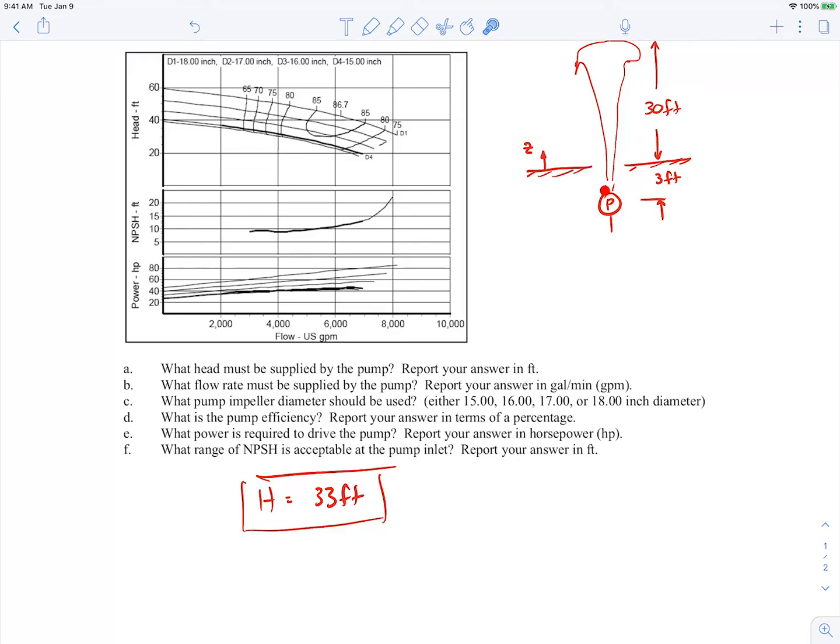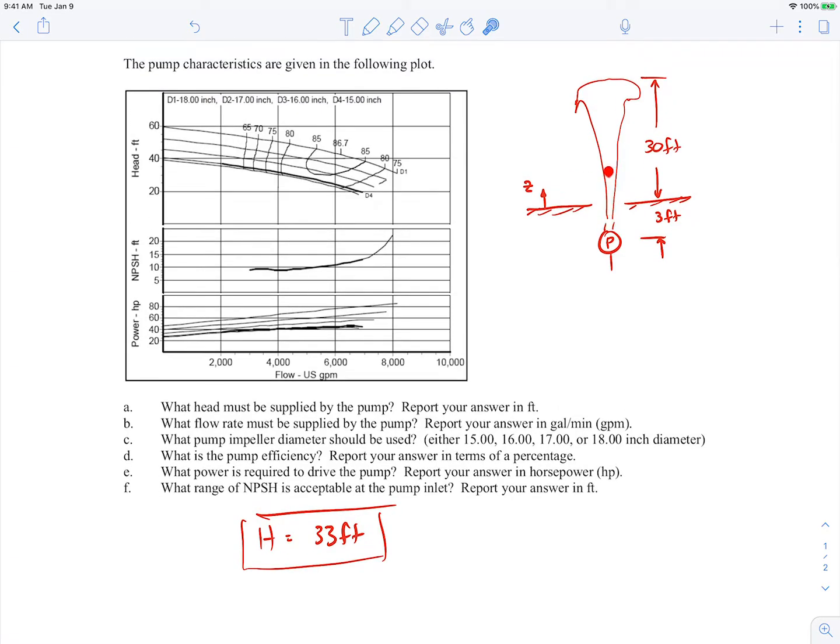If we can get the pump to provide 33 feet of head into the fluid, then that will be enough to overcome the elevation head in order to get the flow to go from bottom to top here.